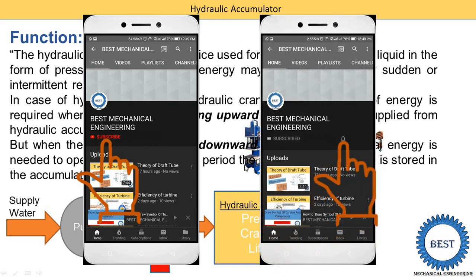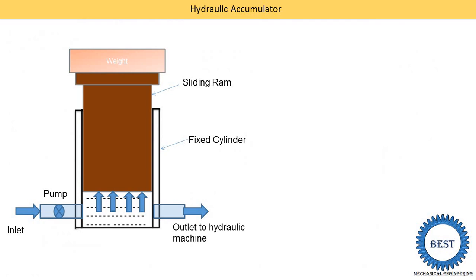Now we understand the construction and working — I will explain the working with animations. In the construction, there are three main components. The first is the fixed vertical cylinder. When you see this cylinder from the top view, it gives a circular shape and is a hollow cylinder.